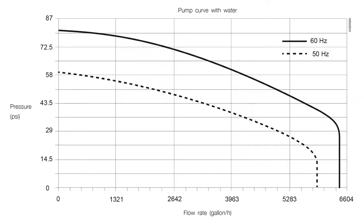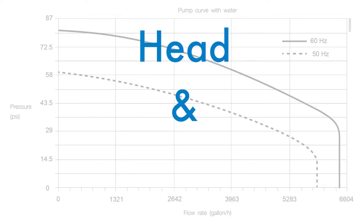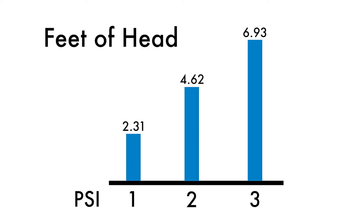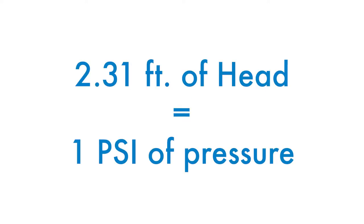A basic pump curve provides two pieces of information about the pump's capacity to move water: head and flow. Head is the height to which a pump can raise water straight up. Water creates pressure or resistance at predictable rates. For example, every 2.31 feet of head equals 1 psi of pressure.